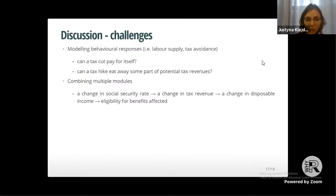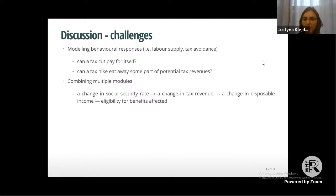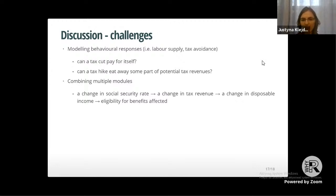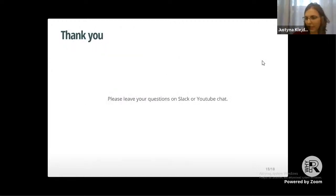Another challenge is combining multiple modules. For example, a change in social security rates transfers to a change in tax revenue due to interactions between the two systems, which in turn affects disposable incomes and benefit eligibility. We are working towards making these transitions smooth and extending the model with different modules to capture the complete picture. Thank you for your attention — happy to answer questions on Slack or YouTube chat.